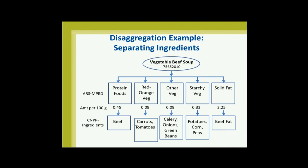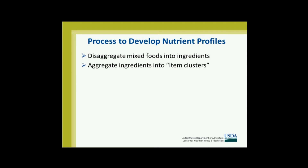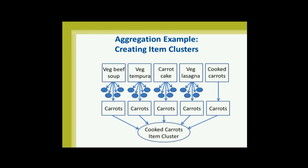What we do at CNPP is break that down further. If we know there are red or orange vegetables in this soup, we identify that it's both carrots and tomatoes. The other vegetables are celery, onions, and green beans. We break it down much more finely — and that's what our item clusters are. We then take all of those ingredients from all of those foods and aggregate them into item clusters. So we have a cooked carrot item cluster in the food pattern, taking the cooked carrot from all the different sources.